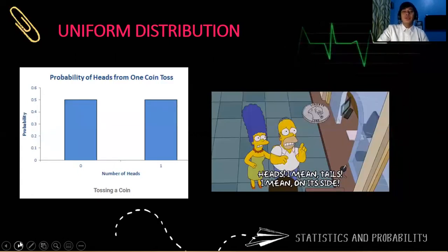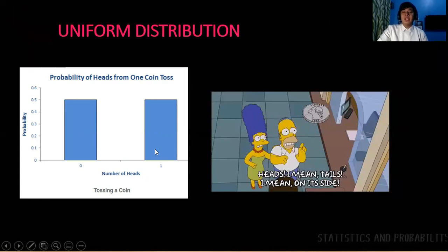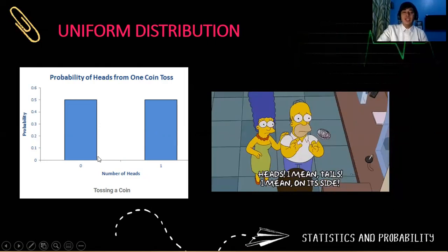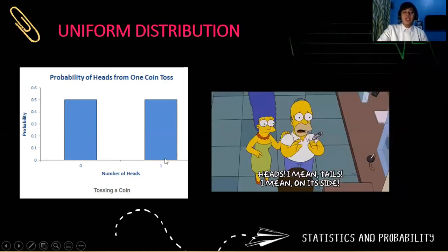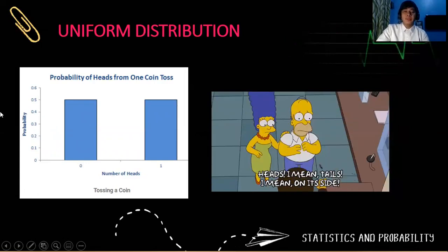The same thing when you flip a coin or toss a coin. The probability of getting a head is 1 half and the probability of getting a tail is 1 half. So in this particular example, there is an even chance to either get a head or a tail. So that when you draw the histogram, we can also form a uniform distribution.